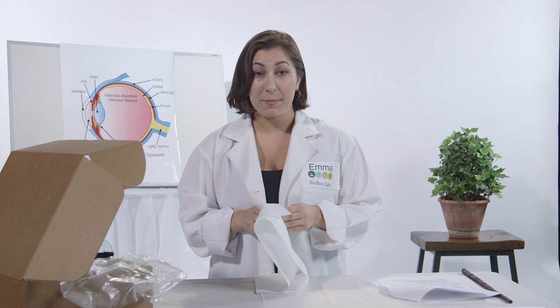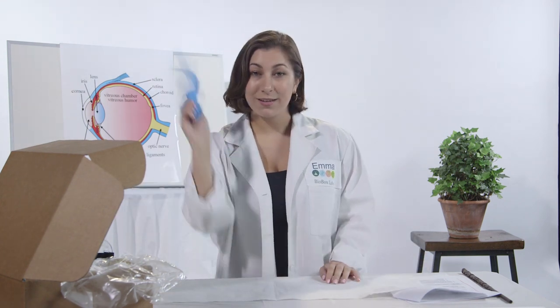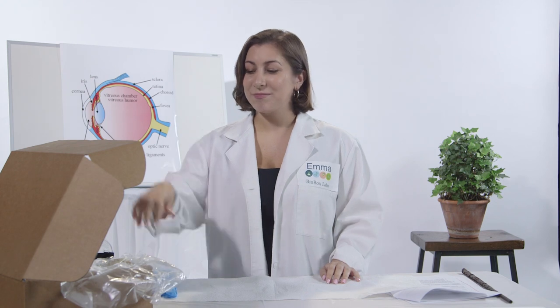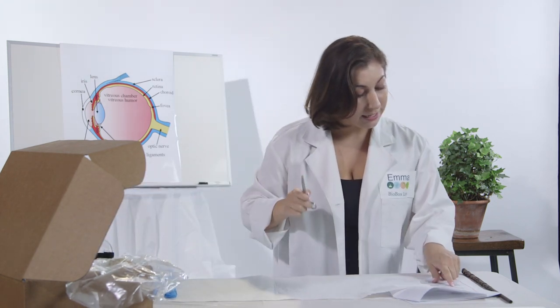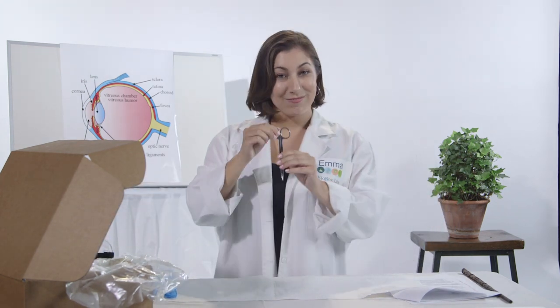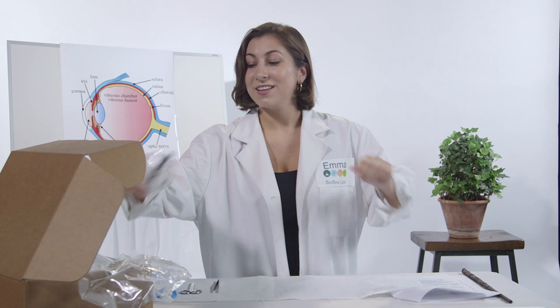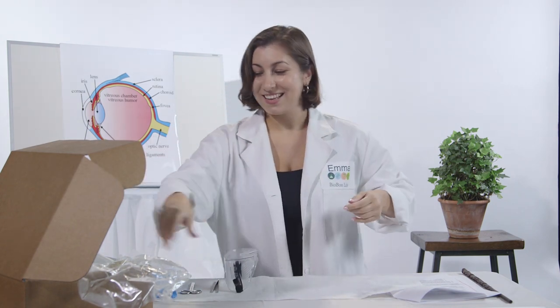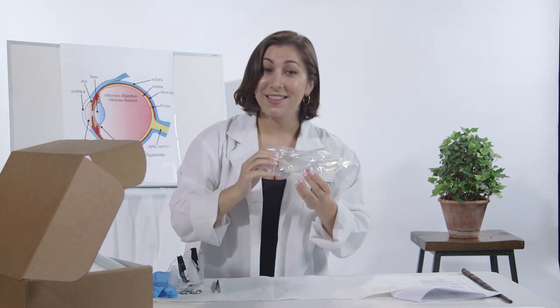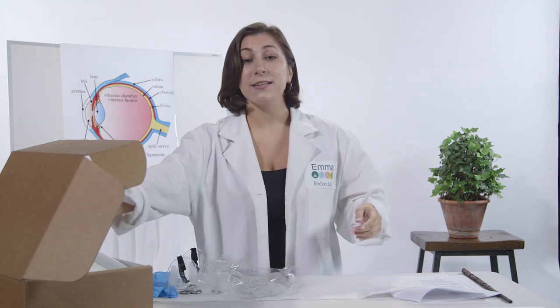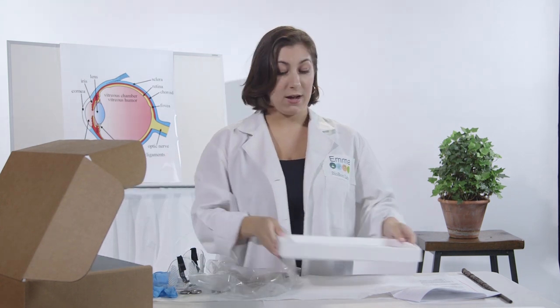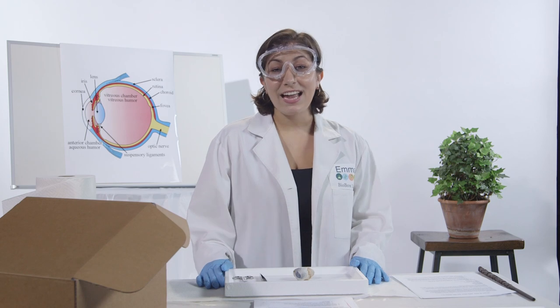So before we start the experiment, it's always very important to set out a paper towel. Next, you always need to make sure you have your gloves. Then, we need our fine point scissors. We can't forget the forceps, goggles, and of course, the eye. And lastly, make sure you always set your tray on top of the paper towel.